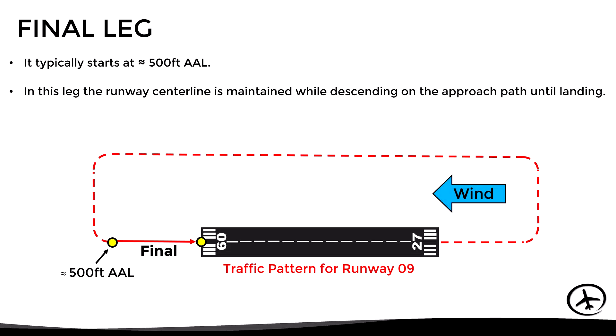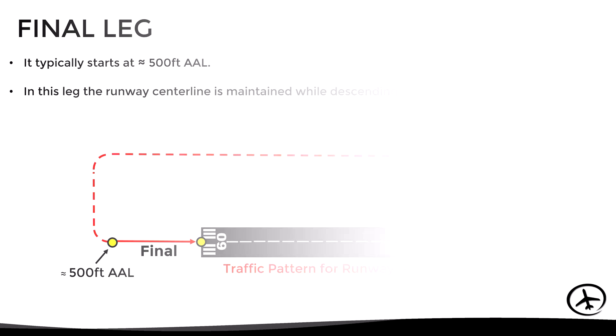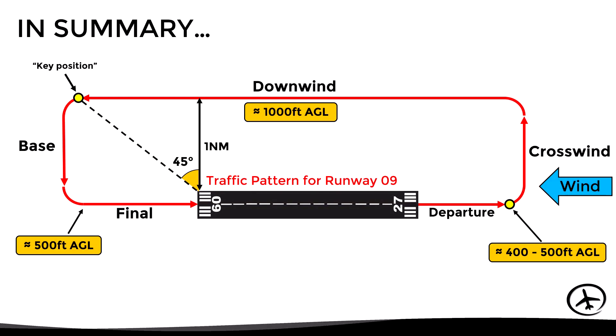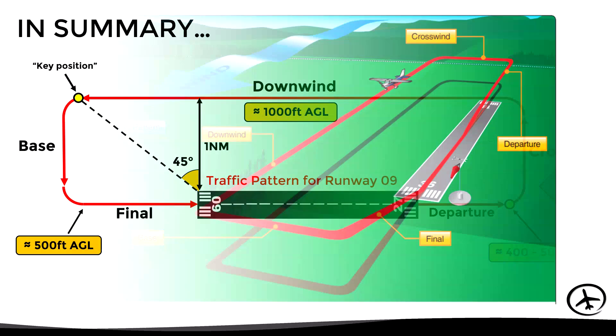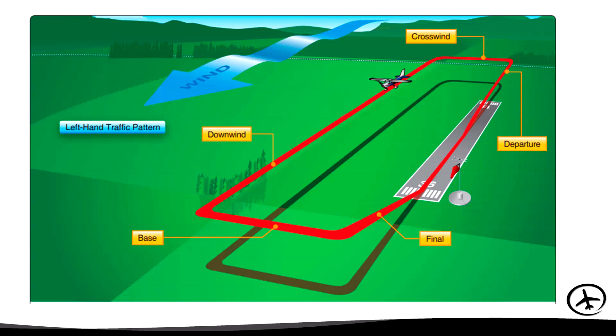So with this we have already seen in detail each of the legs of the pattern. Here we have a summary of all the information and parameters used to fly the pattern, and in this other image we can see a 3D representation of the pattern — in this case for runway 36.